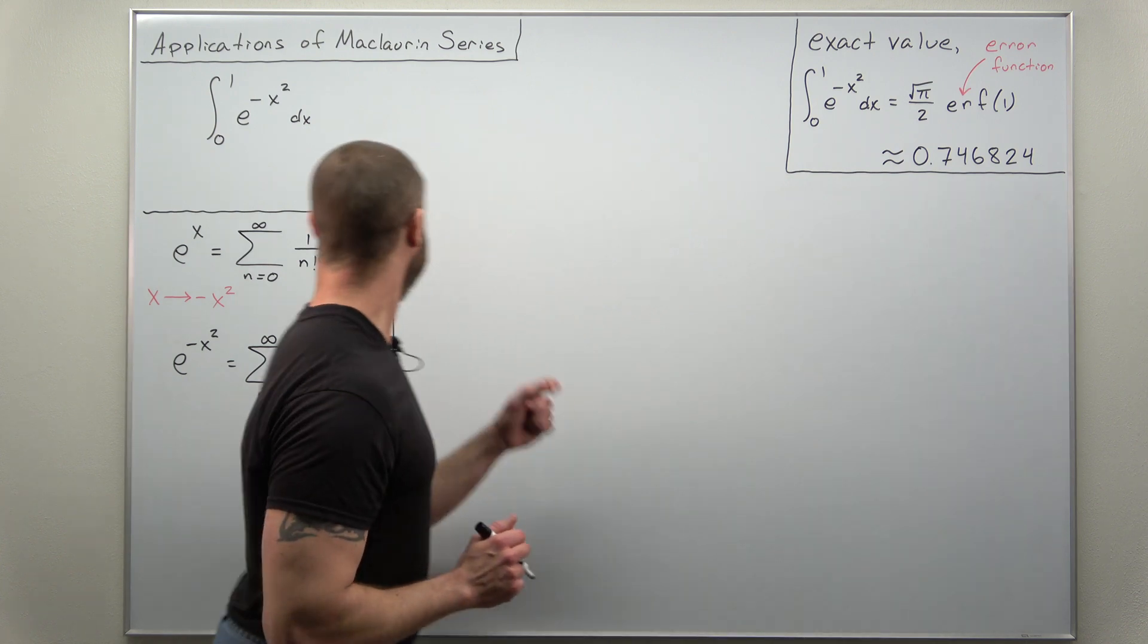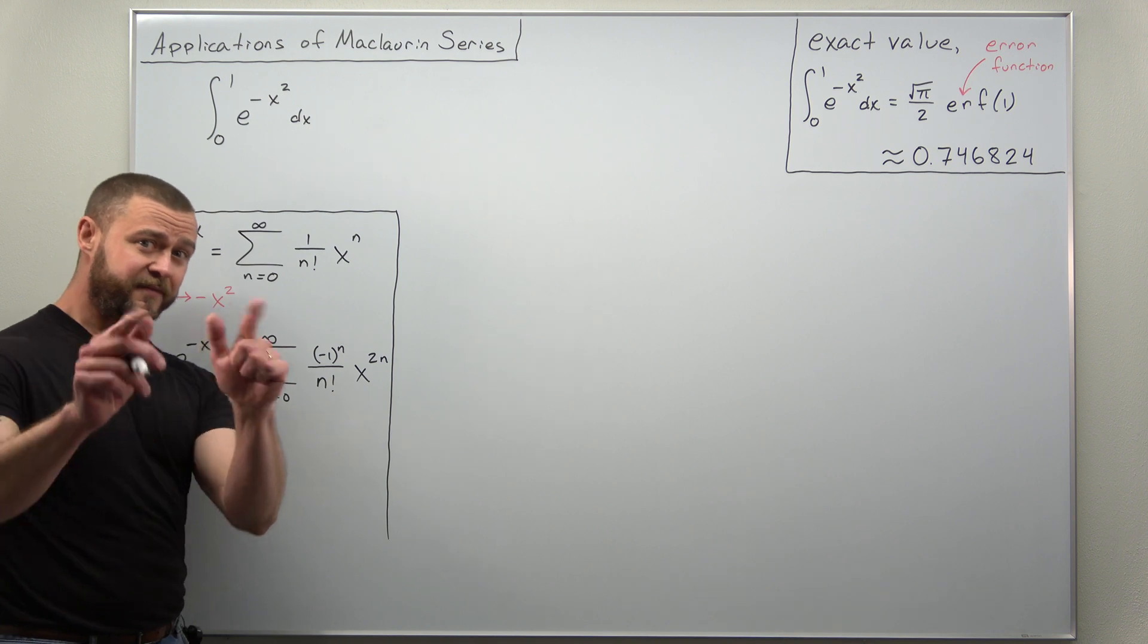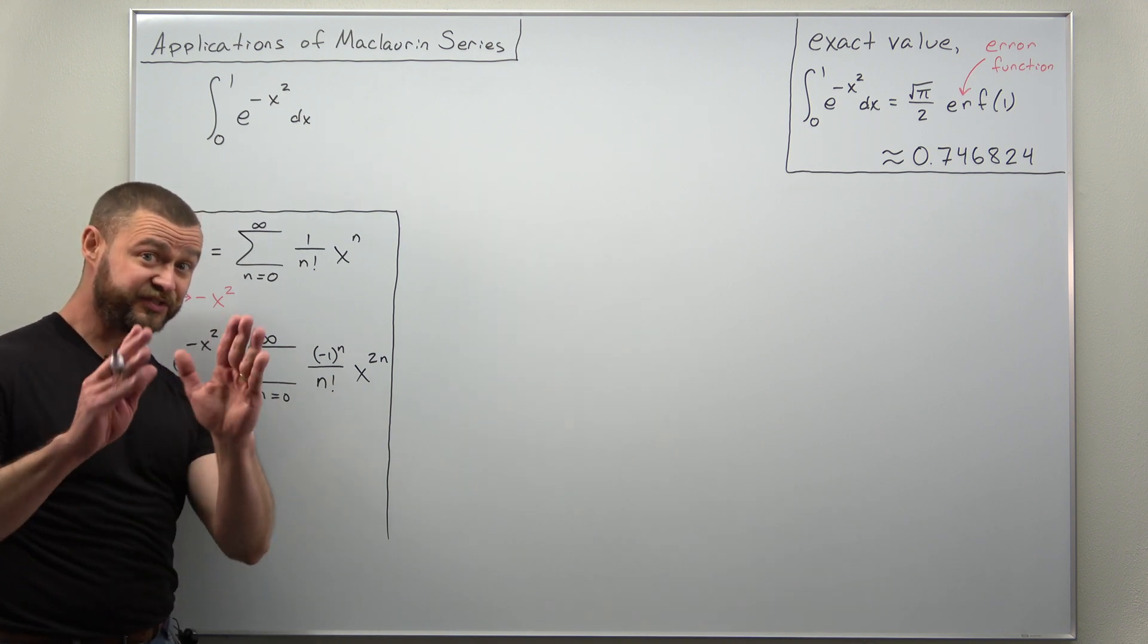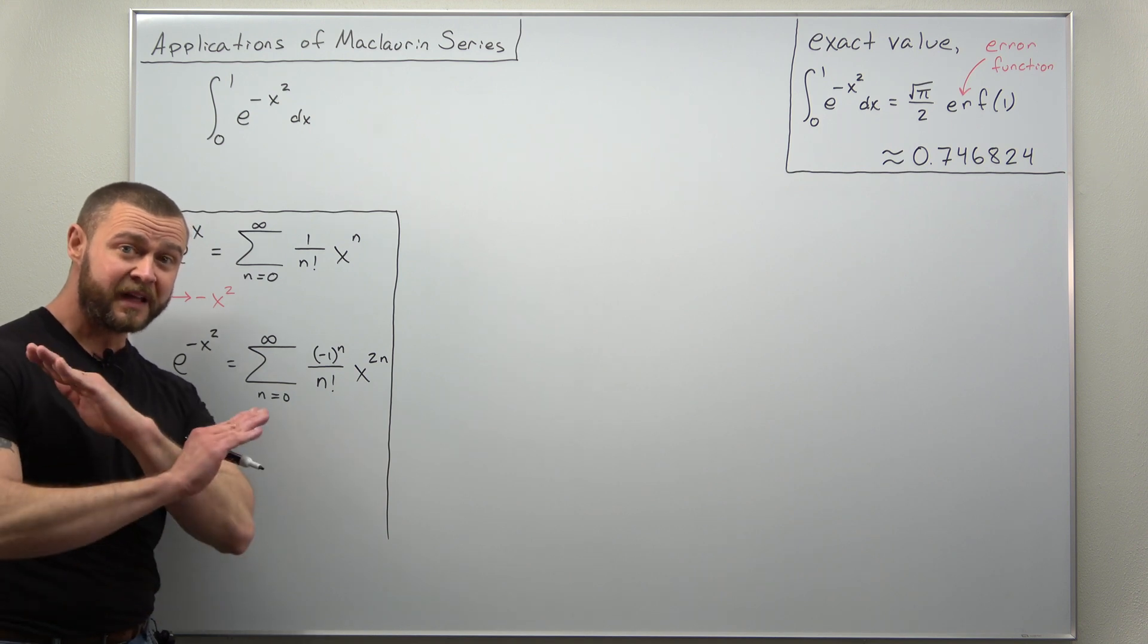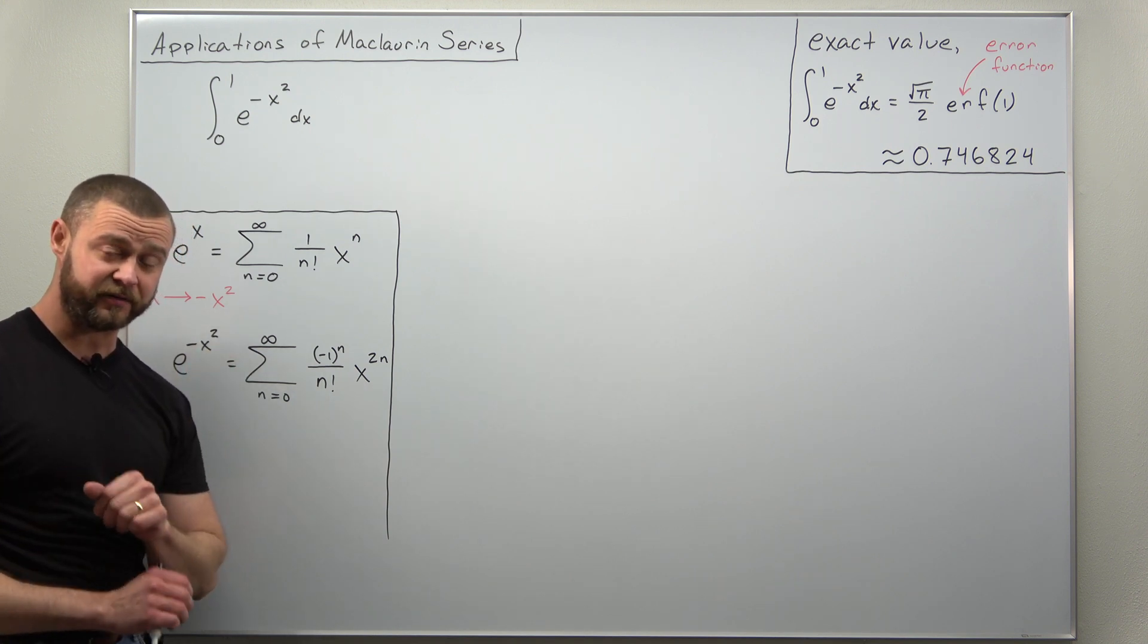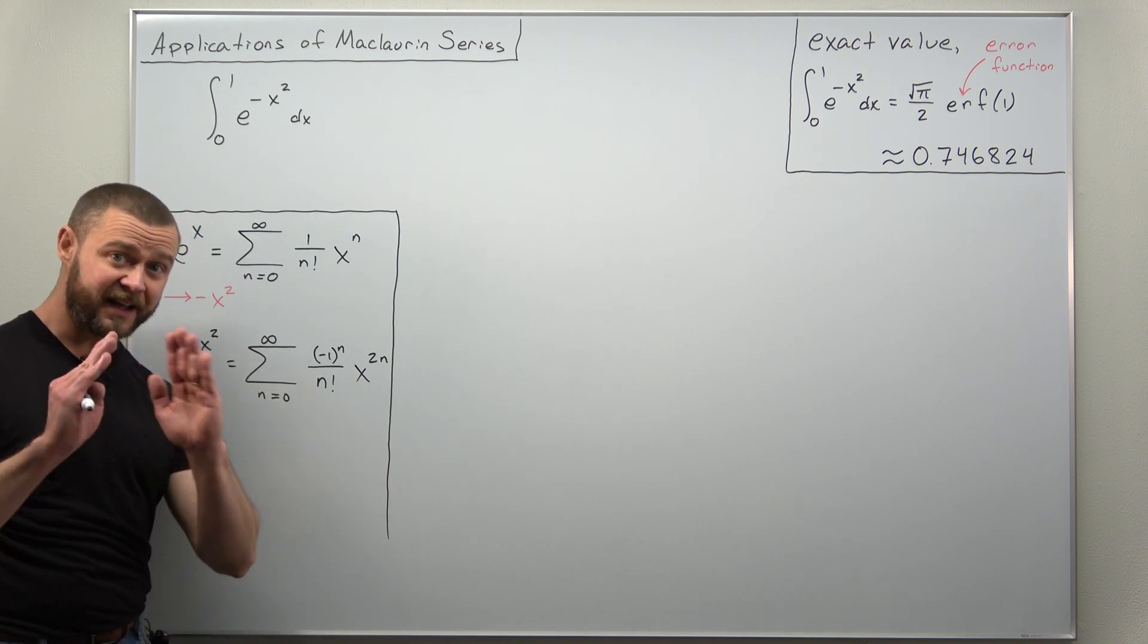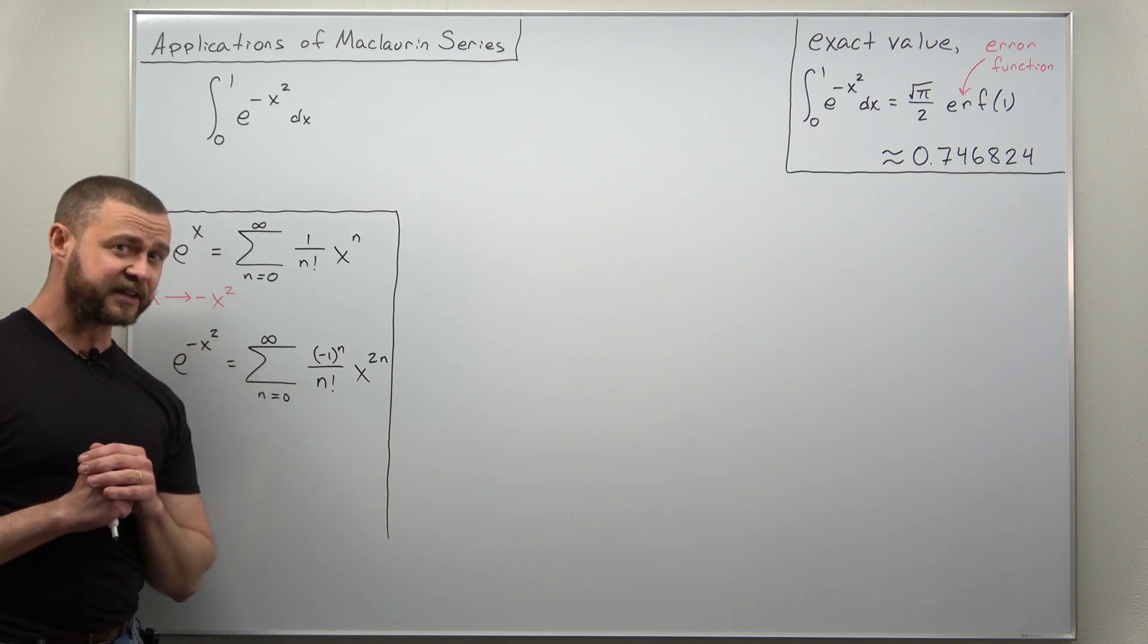Now our integral here, the integral from 0 to 1 of e to the negative x squared, is difficult because our function e to the negative x squared has no anti-derivative. No anti-derivative exists for e to the negative x squared.